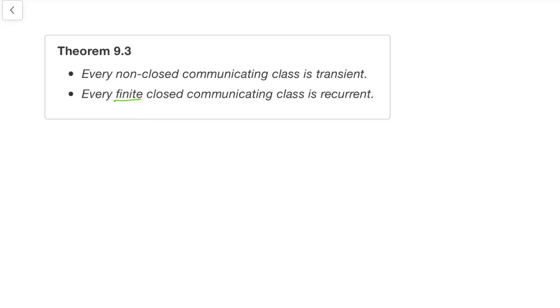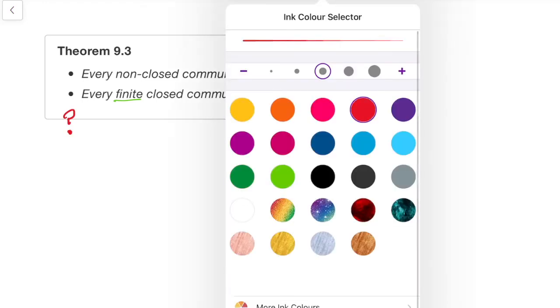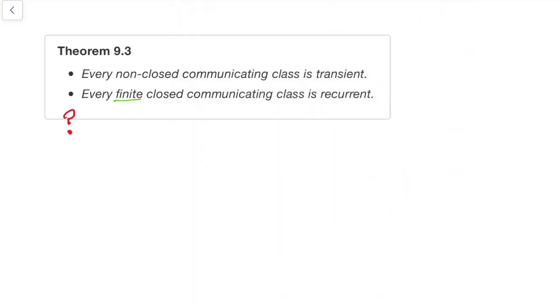And every finite closed communication class is recurrent. So finite just means it has a finite number of states in it, not like the random walk, for example. And closed, remember, meant that once you're in the class, you can't get out. So note that this almost completely solves it for us.